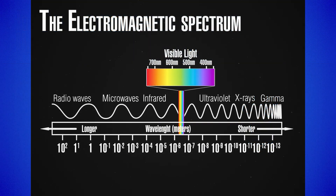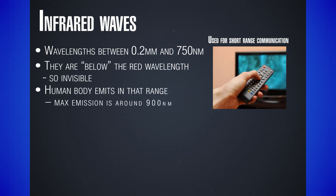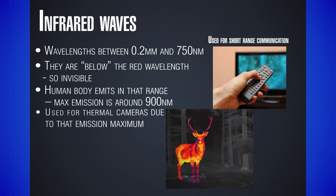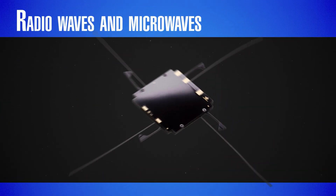Let's take a look at the left side of the spectrum. We find there the infrared waves, the microwaves and the radio waves. Starting with the infrared waves, we find them in wavelengths between 0.2 mm and 750 nm. As the name suggests, they are below the red color and, in consequence, invisible to the naked eye. Our bodies, for example, emit mostly in this part of the spectrum, as maximum emission is around 900 nm. This class is where thermal cameras operate.